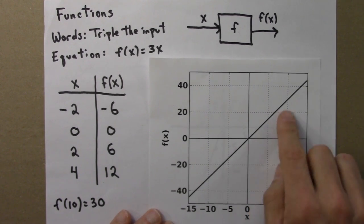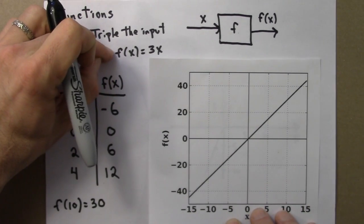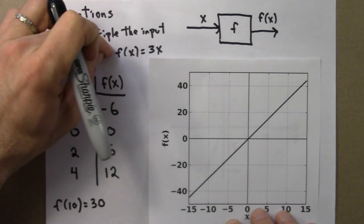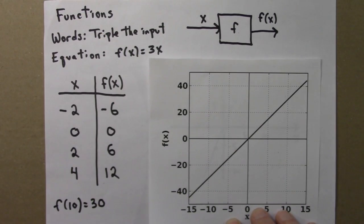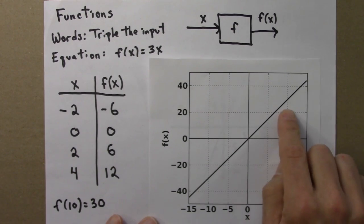Of course, we wouldn't necessarily need to use this graph because we have the formula. But the point is if we didn't have the formula, we could still figure out values of functions by reading them off the graph.